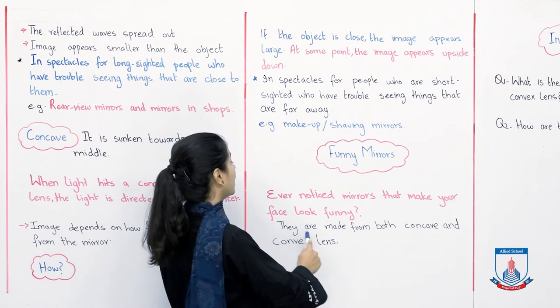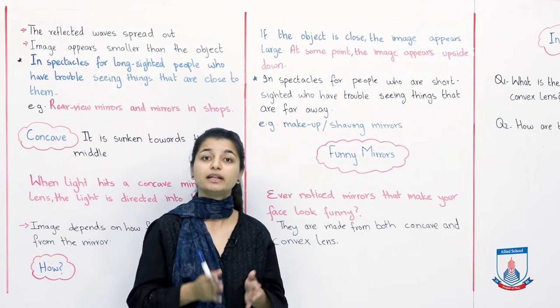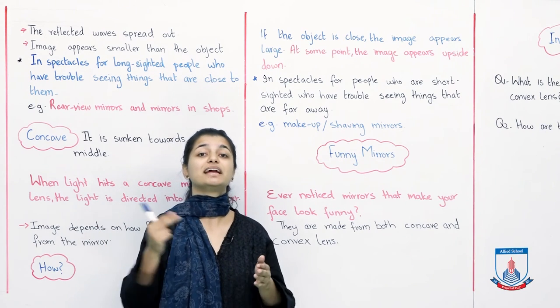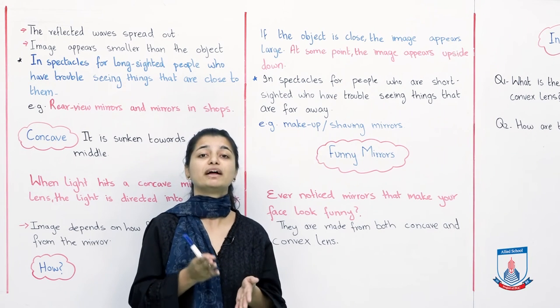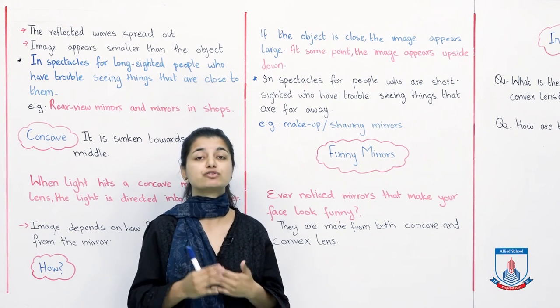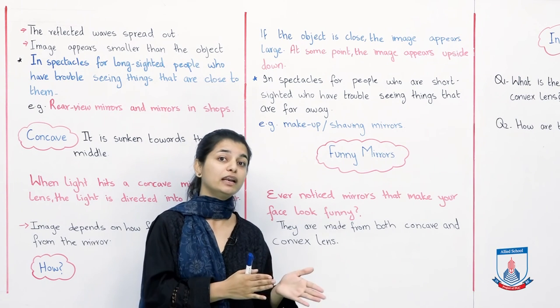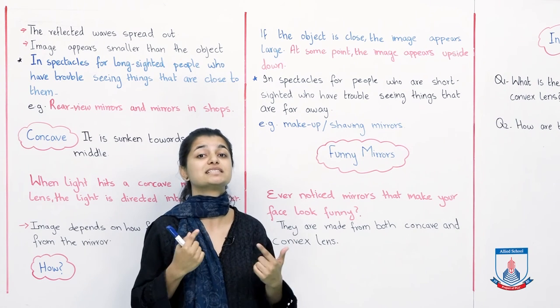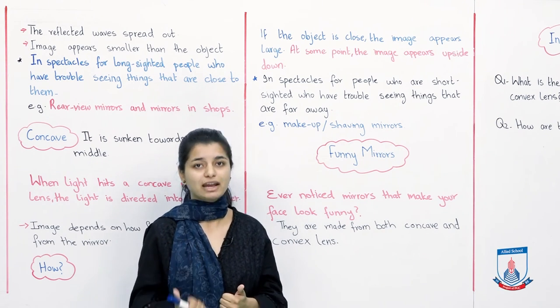It's written right here: they are made from both concave and convex lens. So what's happening in them? Light reflects, spreads also, and also directs to the center. That's why the reflections are funny and distorted, which you sometimes find very amusing. But now that you know what's the logic behind it, it will be more interesting for you to observe if your mirrors and lenses differ.